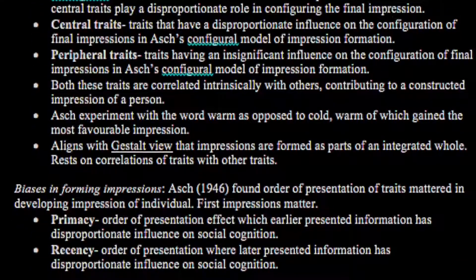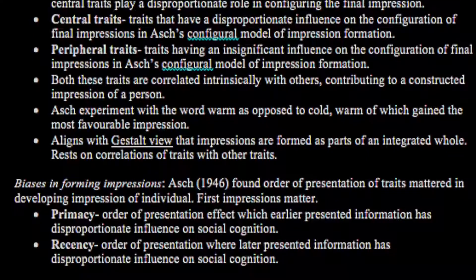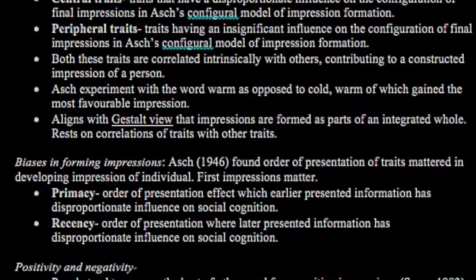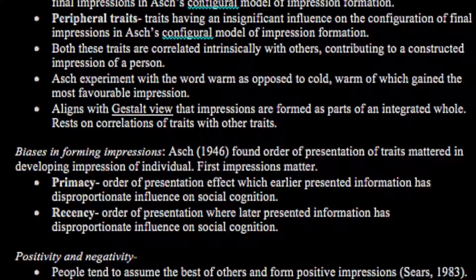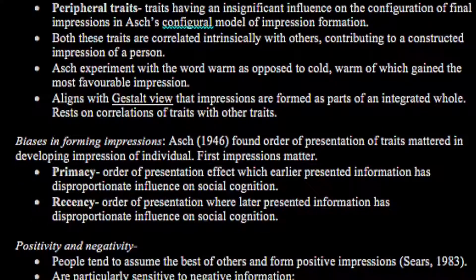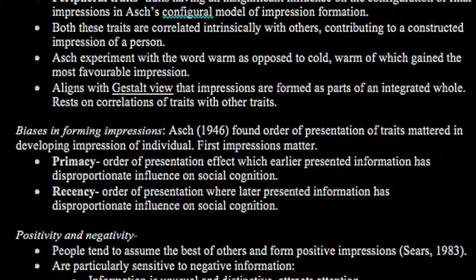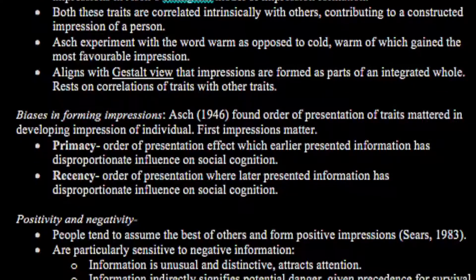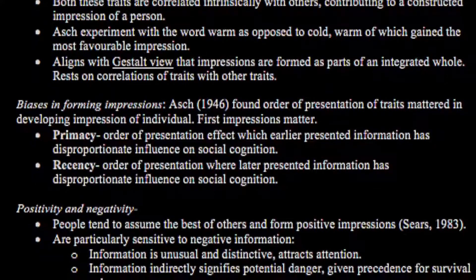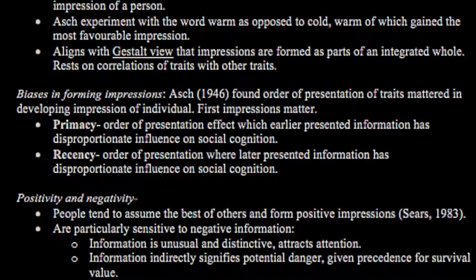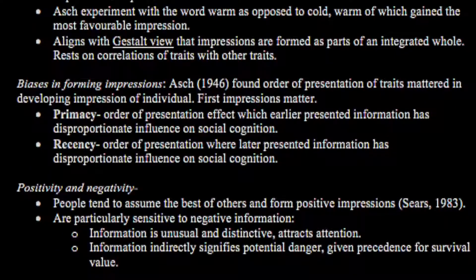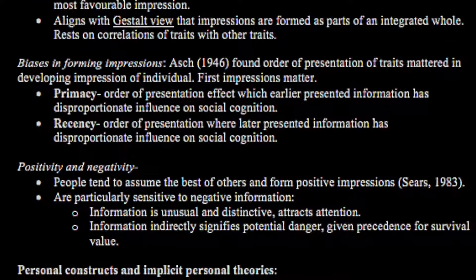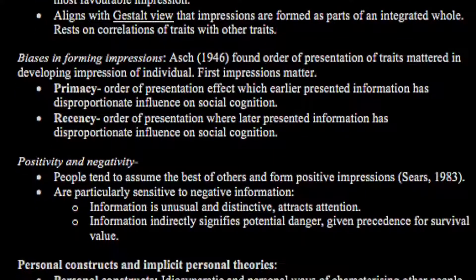Both these traits are correlated intrinsically with others, contributing to a constructed impression of a person, aligning with the Gestalt view that impressions are formed as part of an integrated whole resting on correlations of traits with other traits. There are biases in forming impressions. Asch in 1946 found that order of presentation of traits mattered. These include primacy — where earlier presented information has disproportionate influence on the impression — and recency, where the latter traits influence the impression disproportionately.